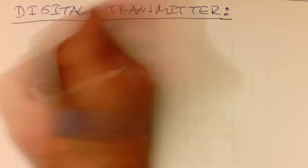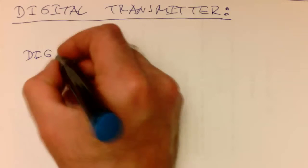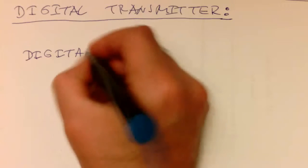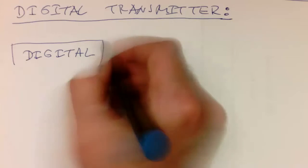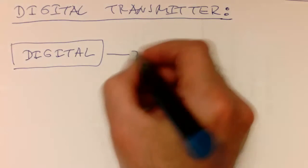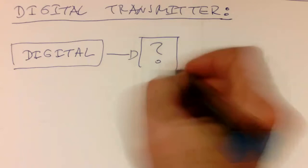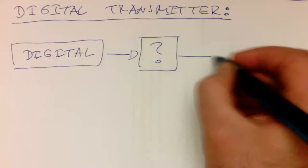So let's just draw this here again. So we had the digital signal here first, and then we need some kind of box which turns this into RF.